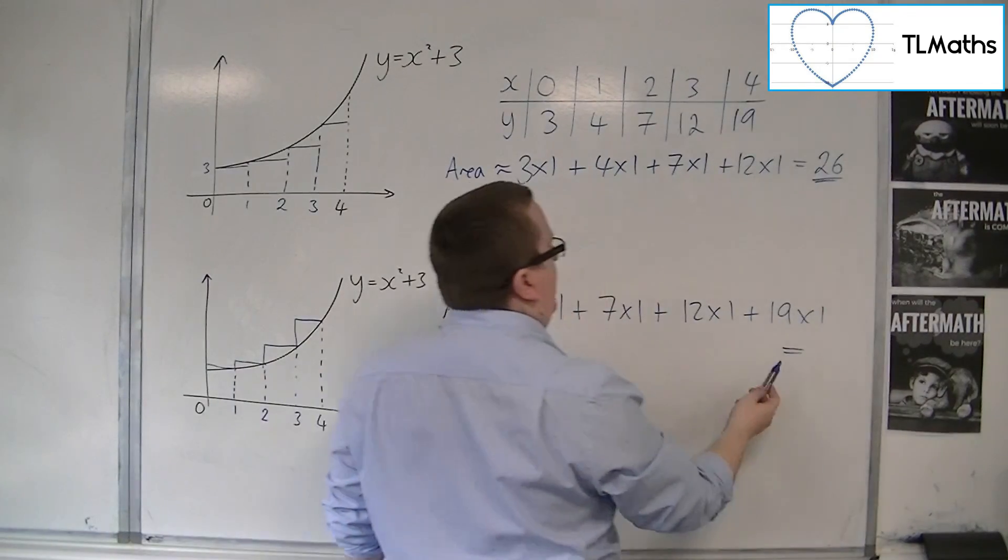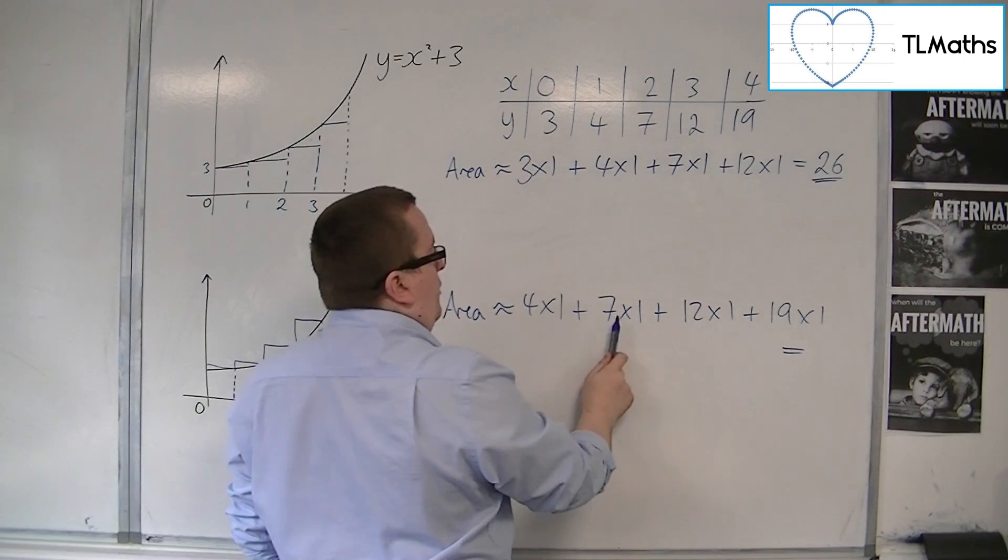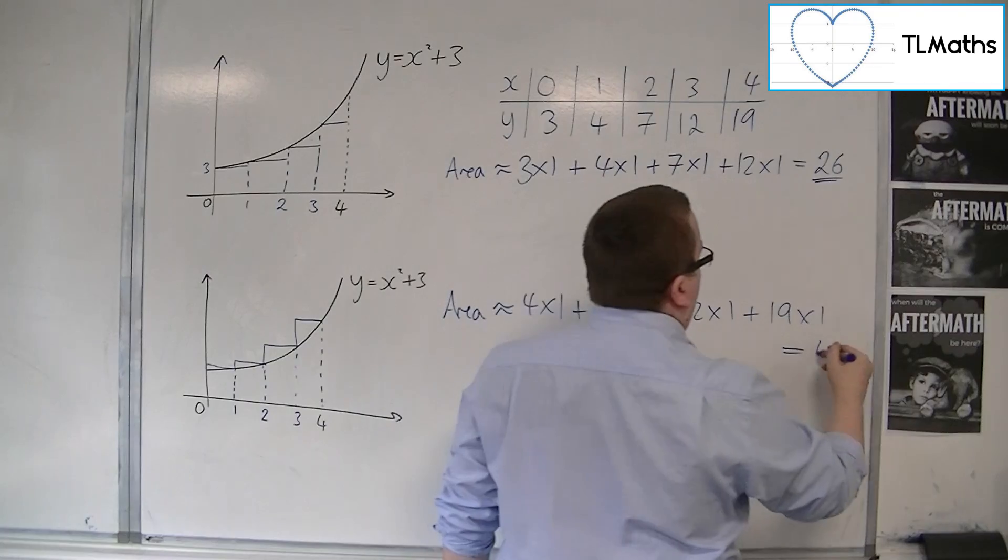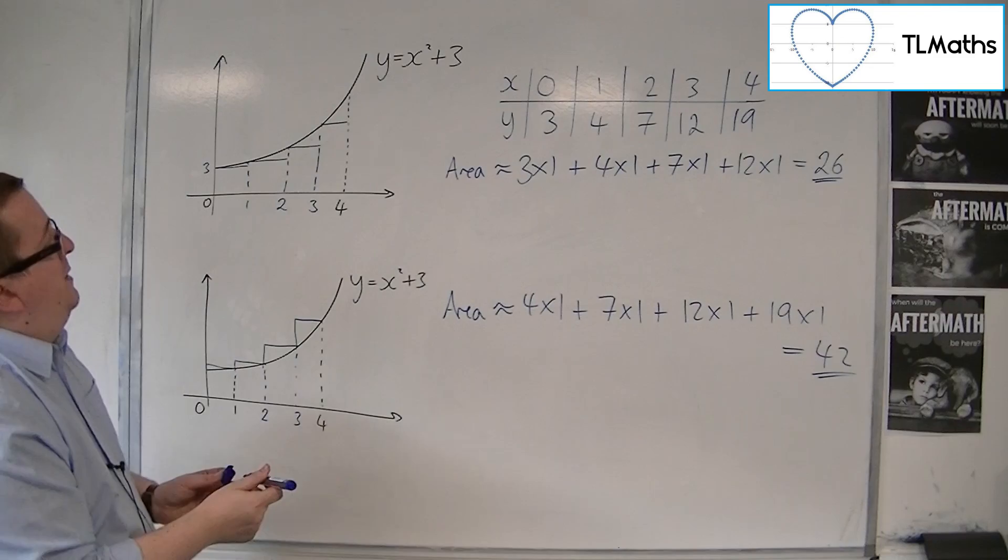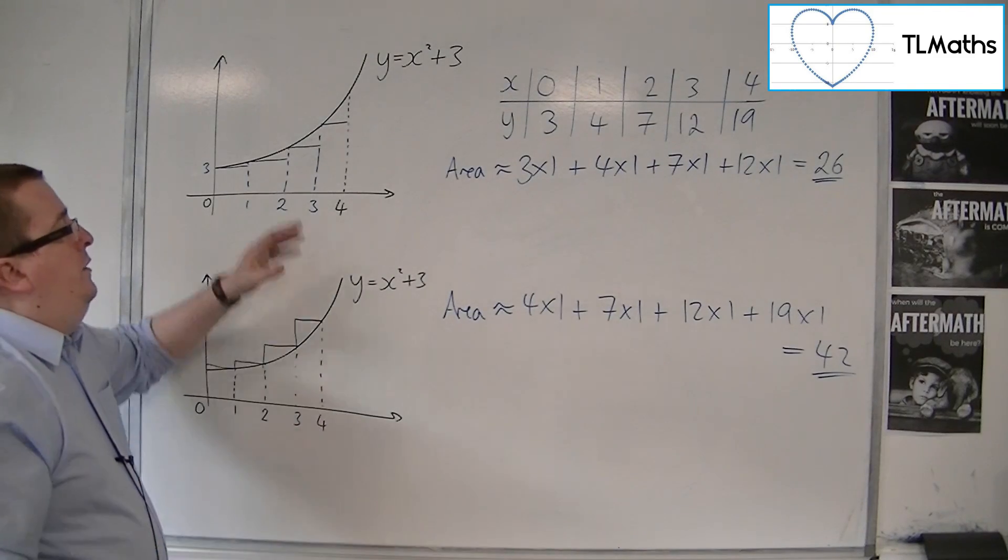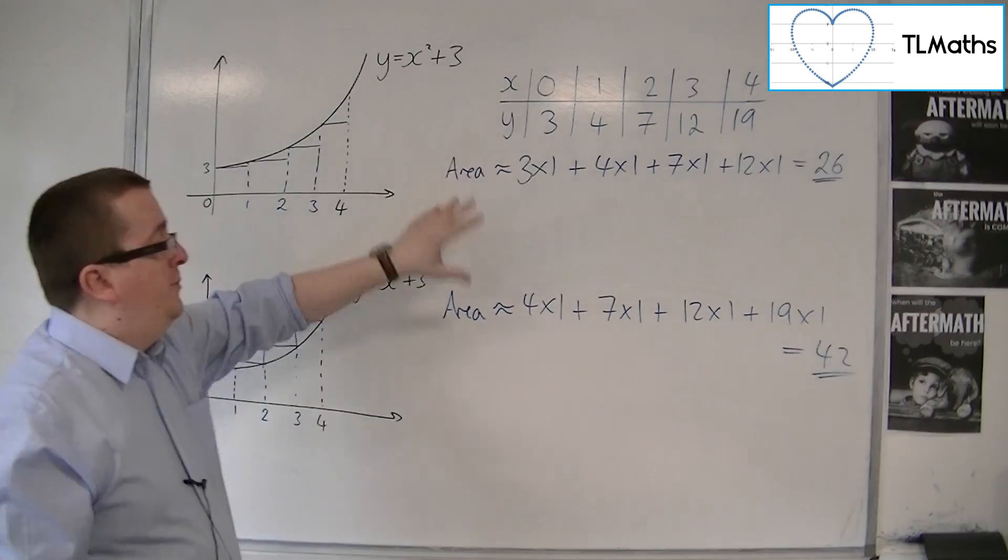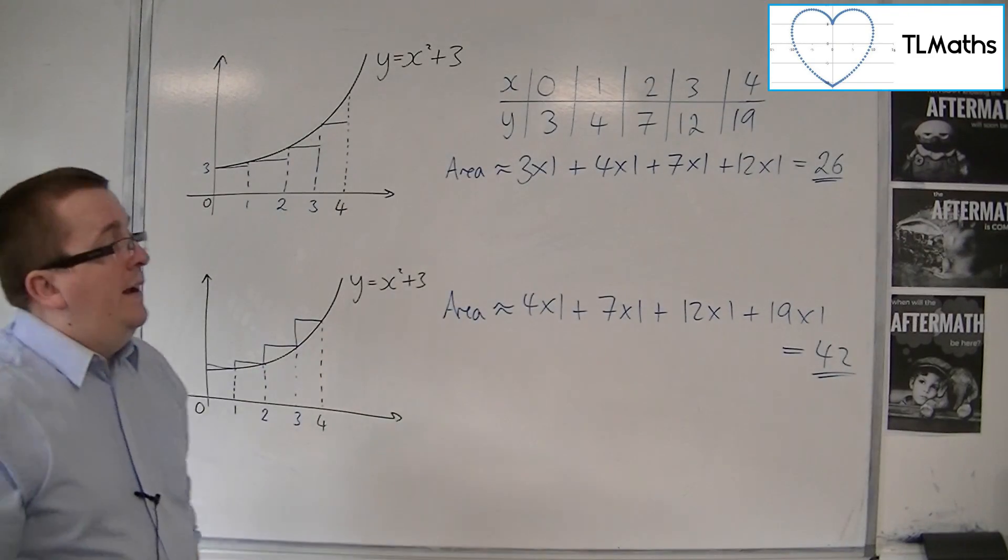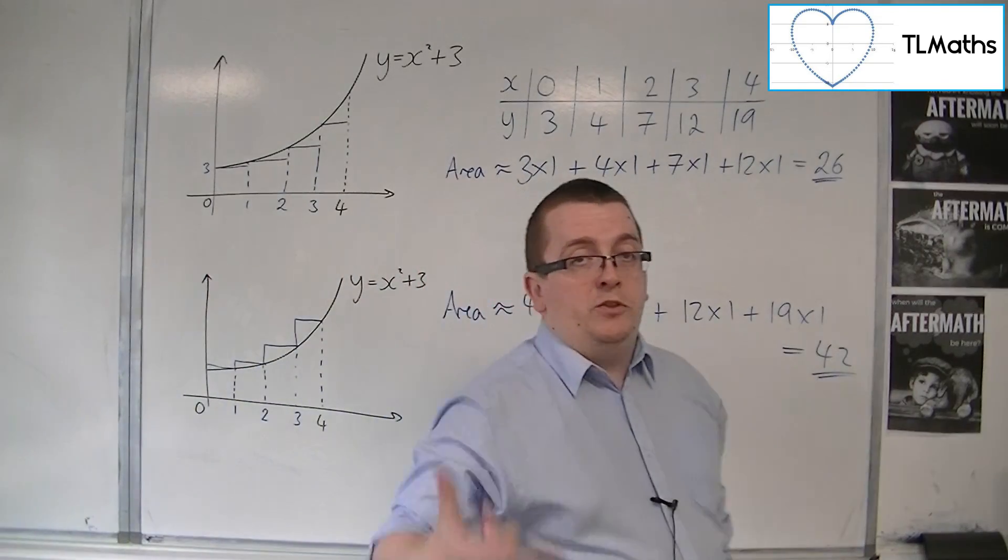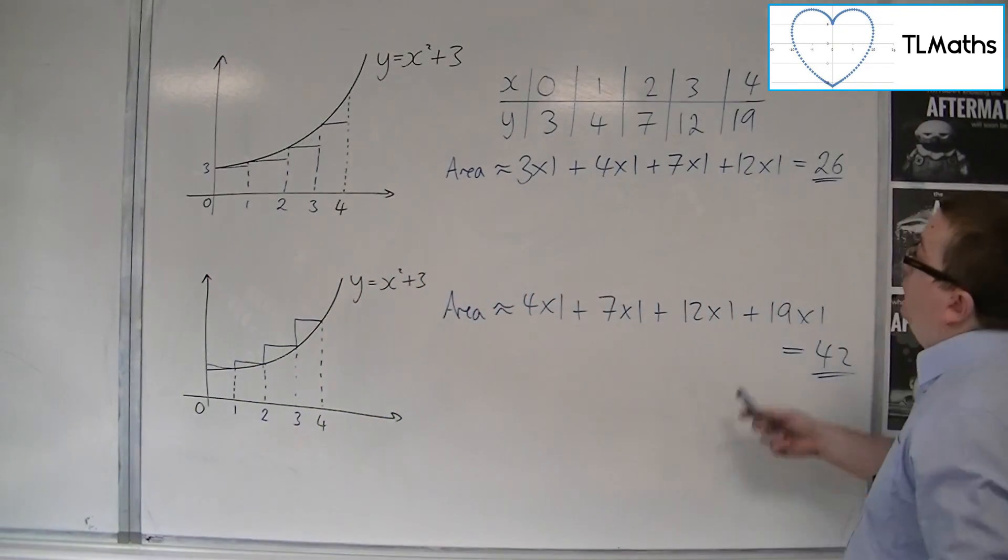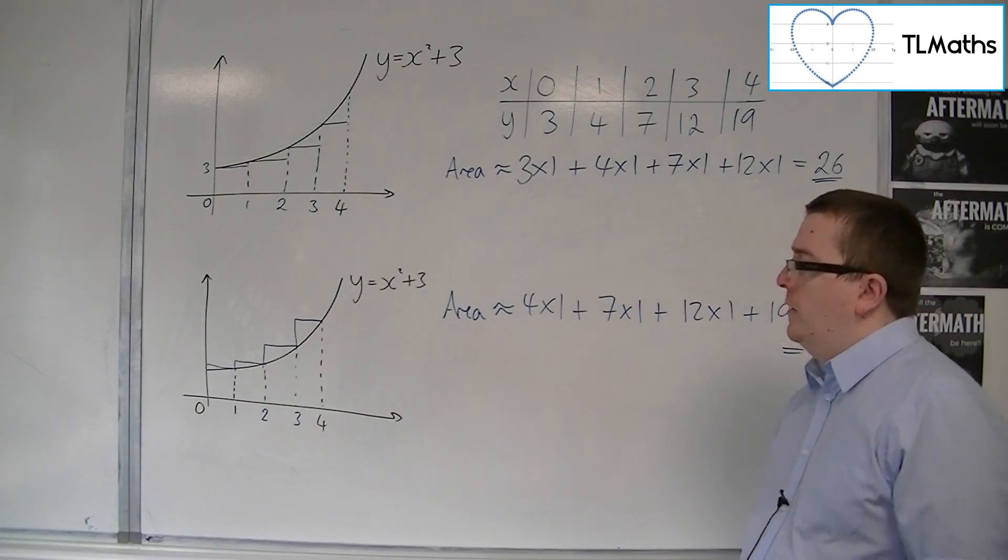So all of those add up to, well, 19 and 12 is 31, 38, 42. And quite clearly, that is an overestimate. So you could split them up into rectangles, and you'd be able to get an underestimate and an overestimate. And I can quite clearly say that the area underneath the curve, between the curve and the x-axis, is somewhere between 26 and 42.